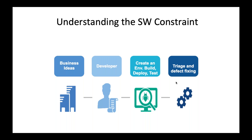A lot of large organizations start with the constraint in creating the environment and building code, but with DevOps, we've been able to automate that and make it more efficient. As we go to smaller batch sizes, it moves into triage, and as we get that to smaller batch sizes, we focus on making that more efficient. The bottleneck can then either be on the business idea side or on the developer. Realistically, the best place to have the bottleneck is on the developer. We then need a pull-type system that pulls work into the system based on when the developer is ready — that's how we manage and plan work released into the system.